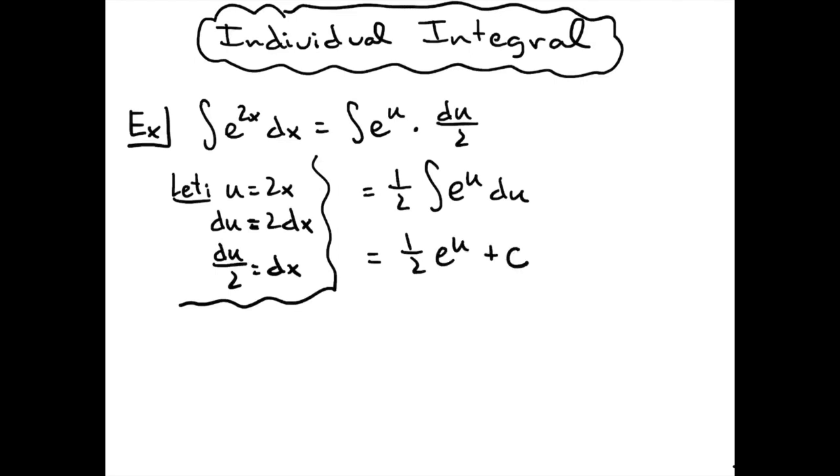And then our last step will be to replace that u with what we originally said it was going to be equal to. So we'll have 1 half e raised to the 2x plus c.